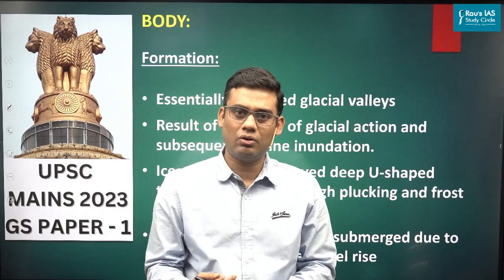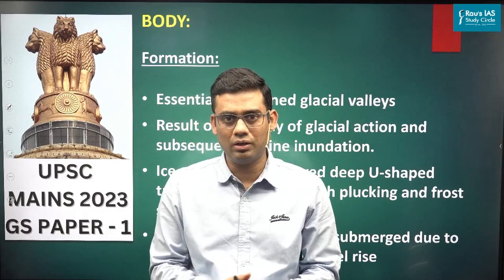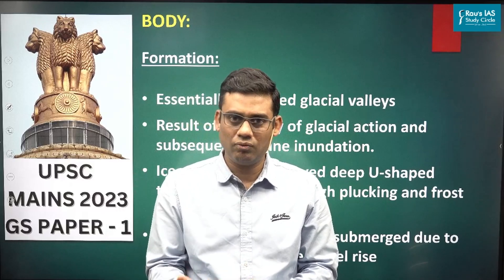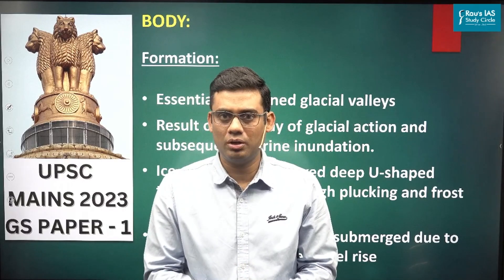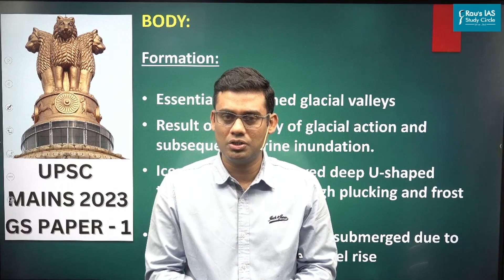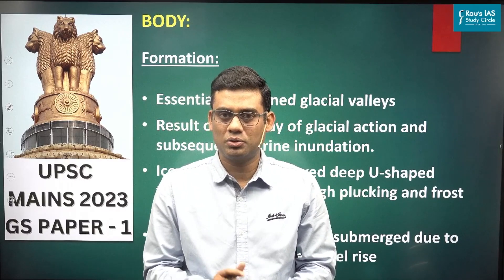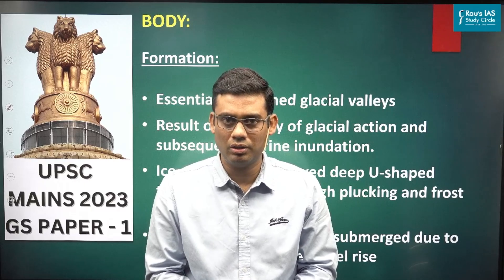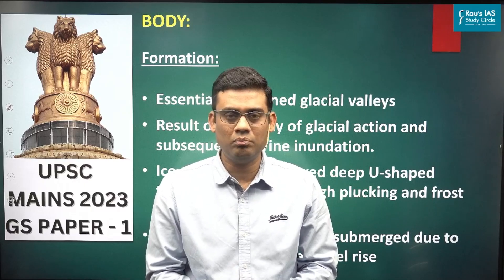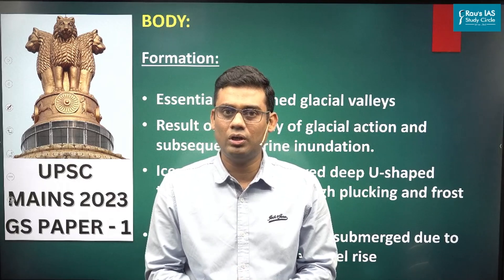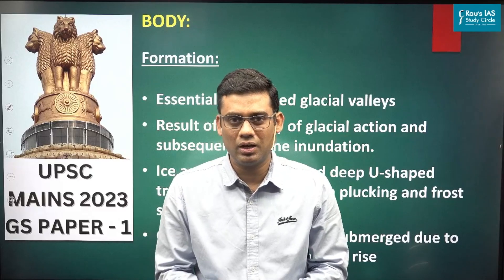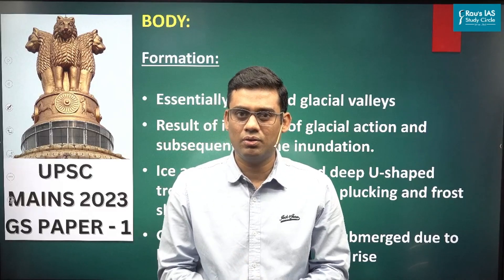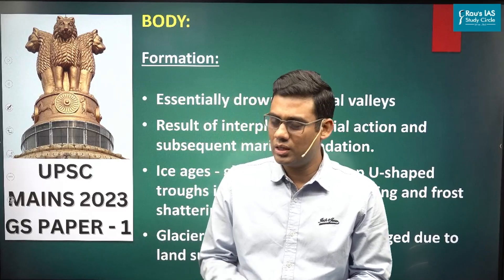After the ice age, as the glaciers were retreating, the sea level was rising. These U-shaped glacial troughs then experienced marine inundation and became drowned glacial valleys. These drowned glacial valleys are called fjords.